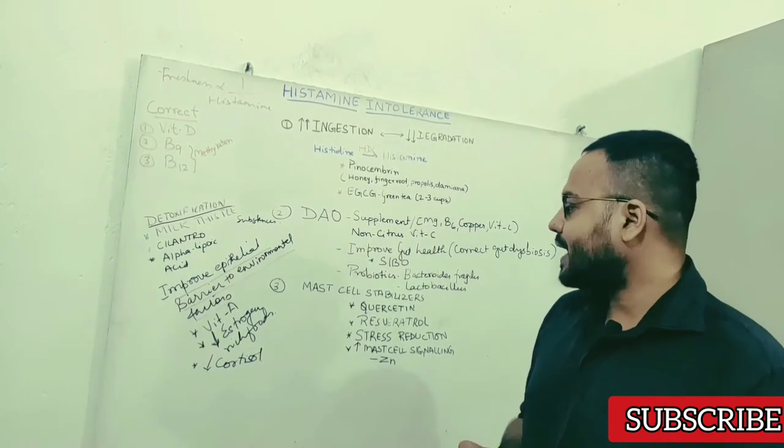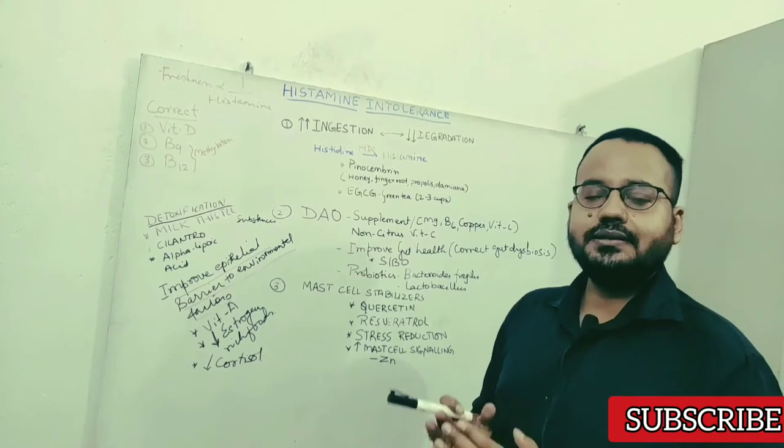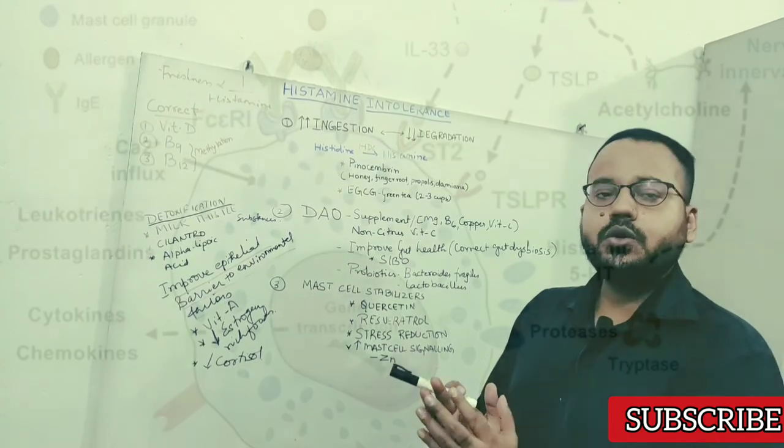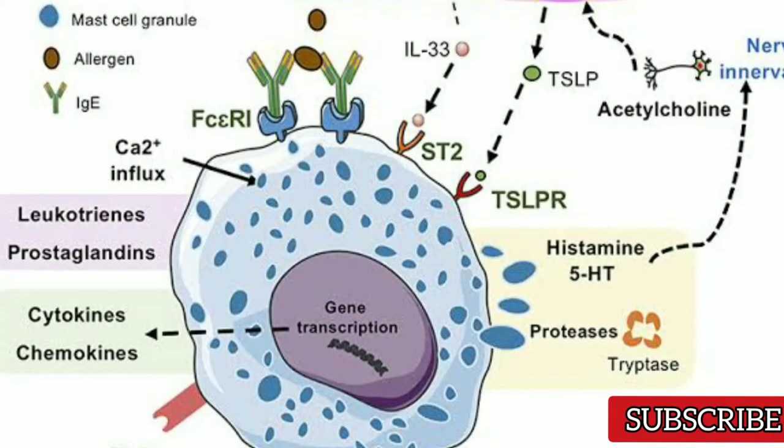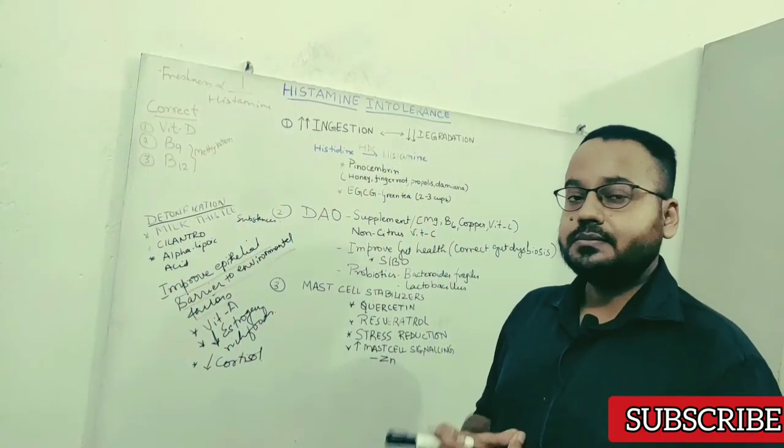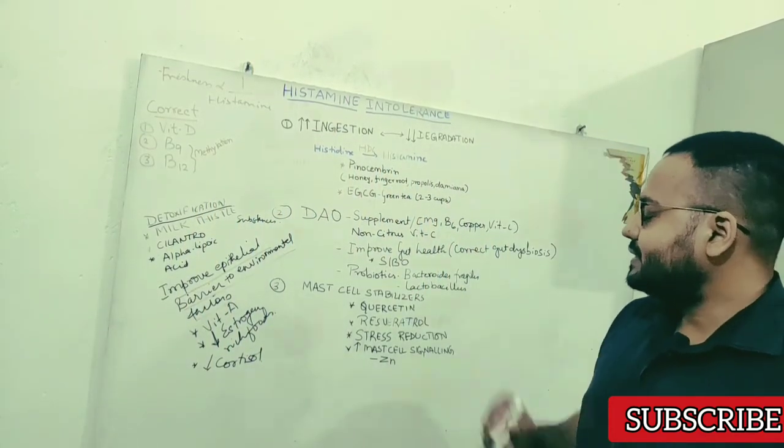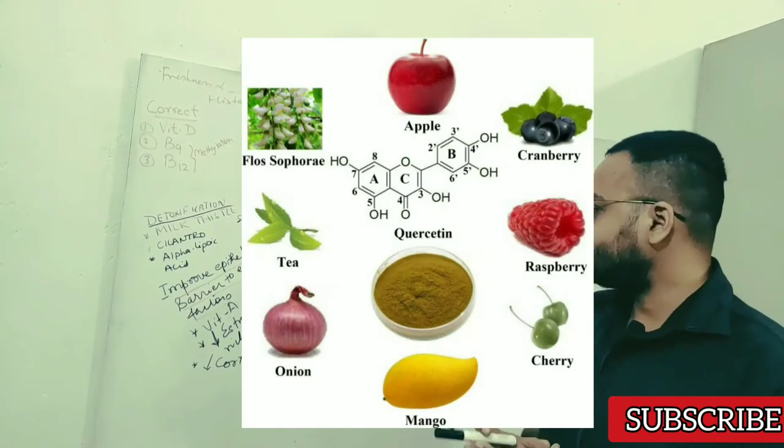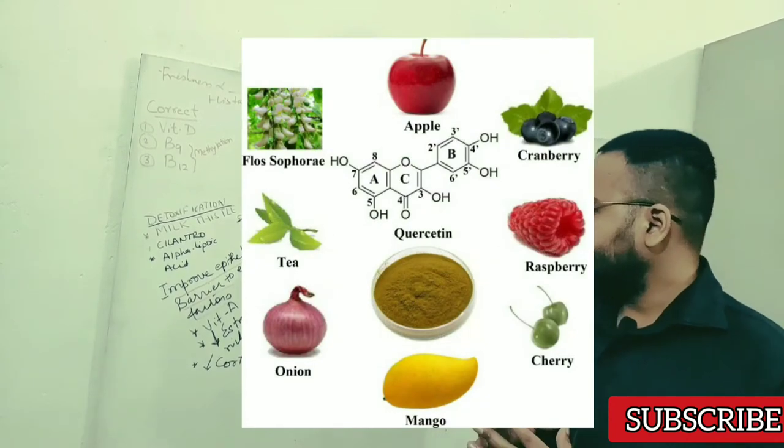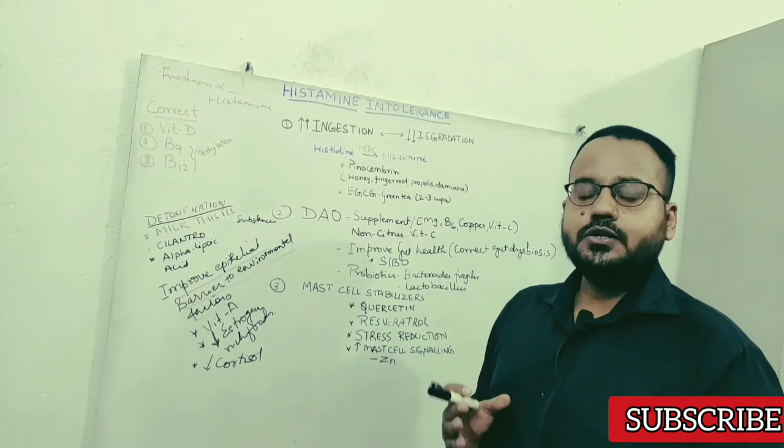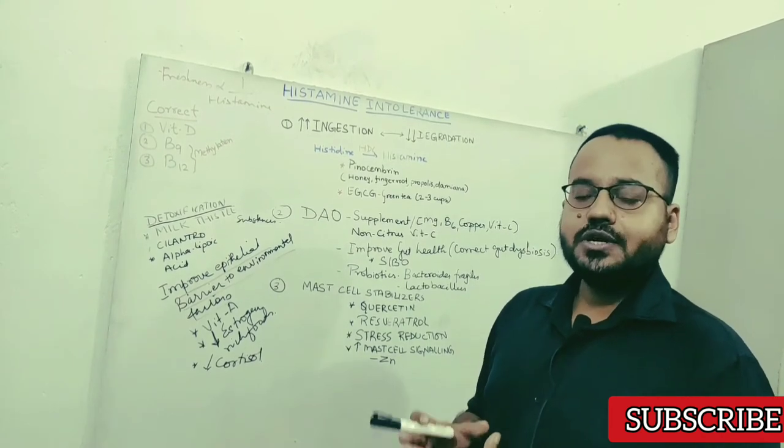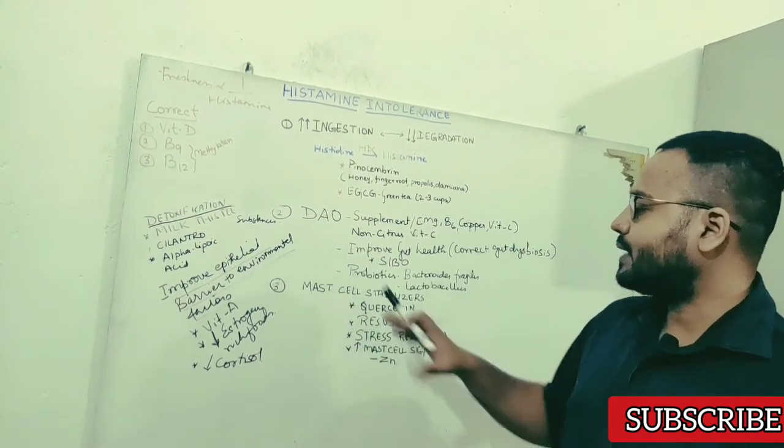Next thing that you want to do is stabilize the mast cell. Mast cells produce histamine. They store histamine in granule form and when these mast cells are unstable, what happens is there is increased degranulation of histamine and that can lead to allergic symptoms. So quercetin is very useful in stabilizing mast cells. It is seen that quercetin given in the dose of one to two grams in four divided doses really helped with stabilizing mast cells.